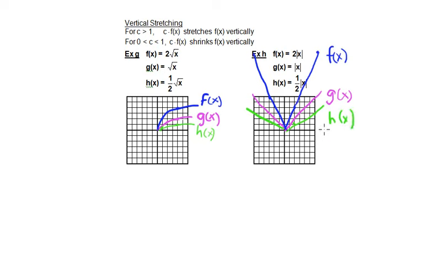So again, if we have some multiplier greater than 1, it stretches the function vertically and makes it taller. If we have some fraction — c is some number between 0 and 1 — then it causes the graph to become shorter and shrinks it.